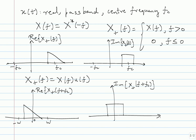One thing to note: going from x(f) to x_+(f), we've chopped out the negative frequencies. The energy in x_+(f) will be half the energy in x(f). To compensate, we multiply by √2 so that energy is preserved. So the 2-norm of x_+(f) equals (1/√2) times the 2-norm of x(f). We'll adjust for this root-2 factor as we go along.